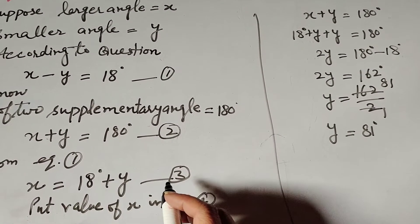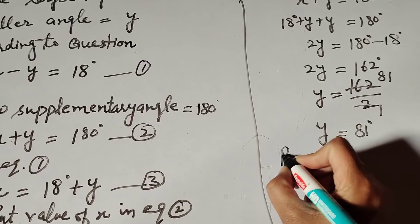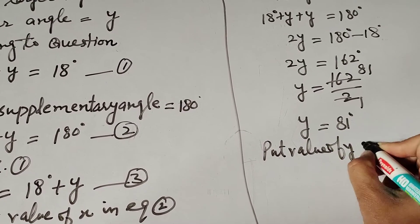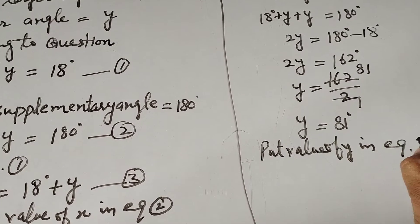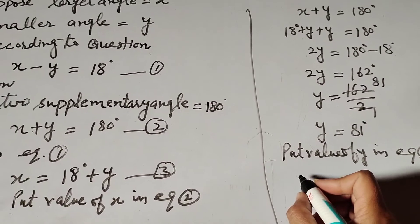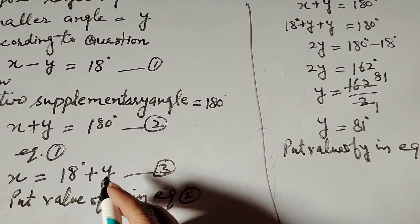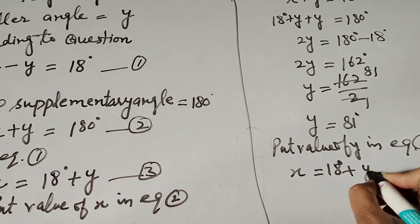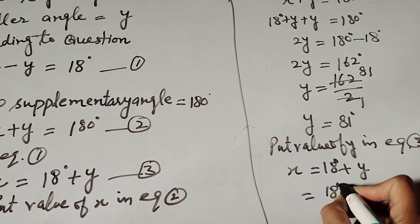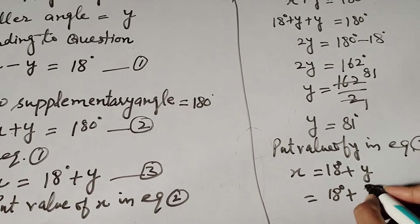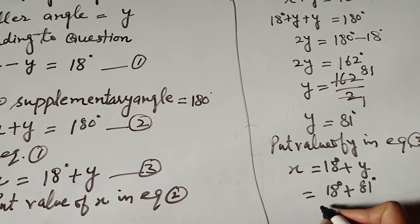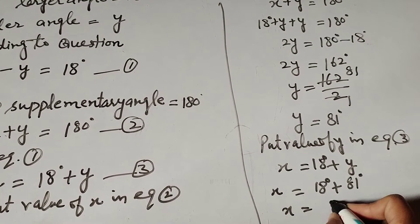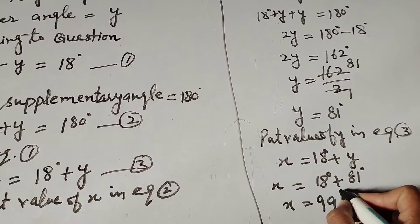Now we put the value of y into equation number 3. Equation number 3 is x equals 18 degrees plus y. Substituting the value of y, which is 81 degrees: x equals 18 degrees plus 81 degrees, so x equals 99 degrees.